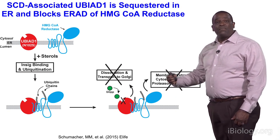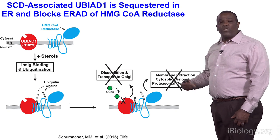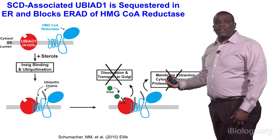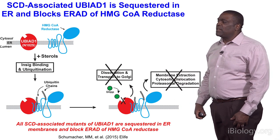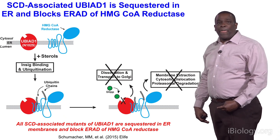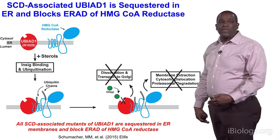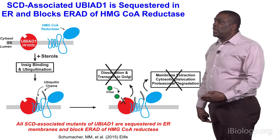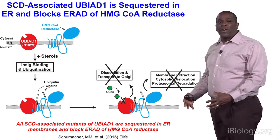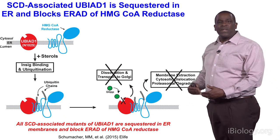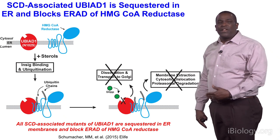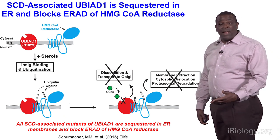We believe this block in reductase degradation contributes to the cholesterol accumulation that characterizes SCD. All 19 additional SCD-associated UBIAD1 mutants beyond N102S are also sequestered in the ER, defective in ER-to-Golgi transport, and all block the ERAD of HMG-CoA reductase in a dominant negative fashion.